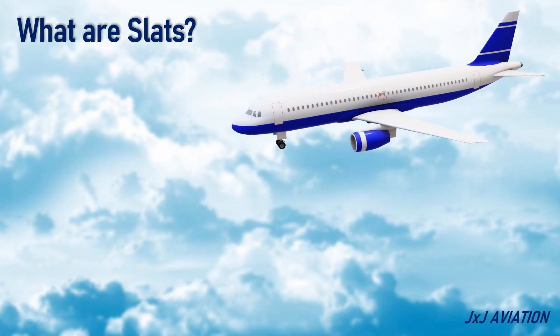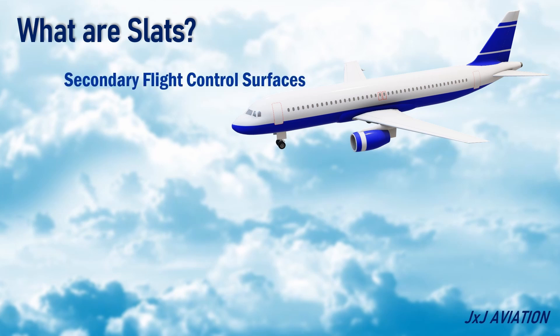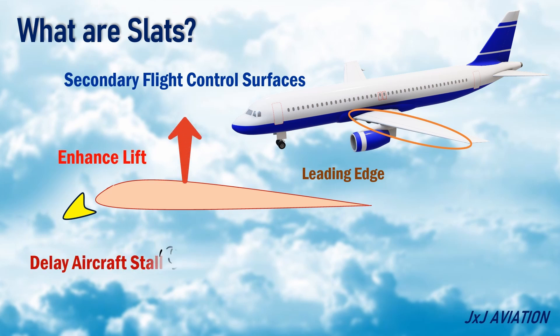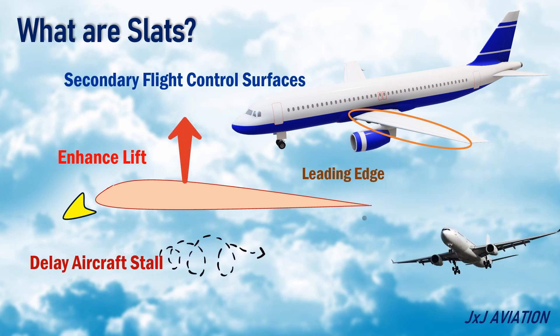Let's understand what slats are. Slats are secondary flight control surfaces which are installed on the leading edge of an aircraft's wing. The slats extend forward and downward from the wing. The primary function of the slats is to enhance lift and delay an aircraft stall during low-speed operations such as during take-off, climb, approach, and landing.